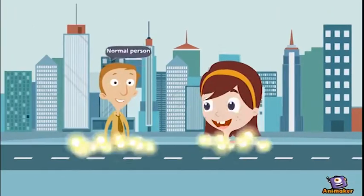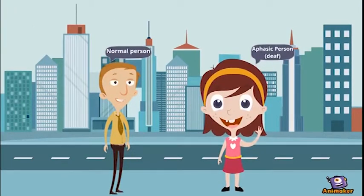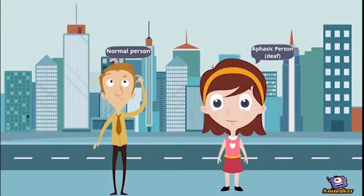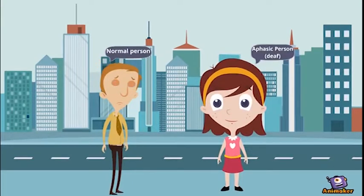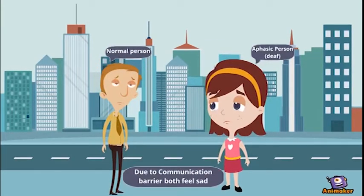So what kind of problem do they face during communication? Here is a simple example. An aphasic person tries to convey her message through signs, but the normal person is unable to understand. Due to this communication barrier, they both feel sad.